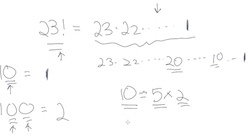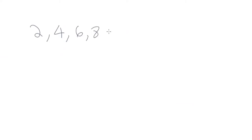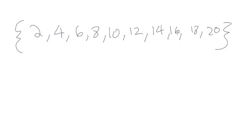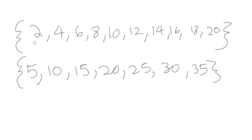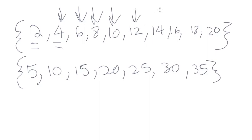Let's list the factors of 2 up to 23: 2, 4, 6, 8, 10, 12, 14, 16, 18, 20. Now, factors of 2 don't help much on their own because there are so many of them. Just knowing a number is even — like 4, 6, or 8 — doesn't tell you it's a factor of 10.